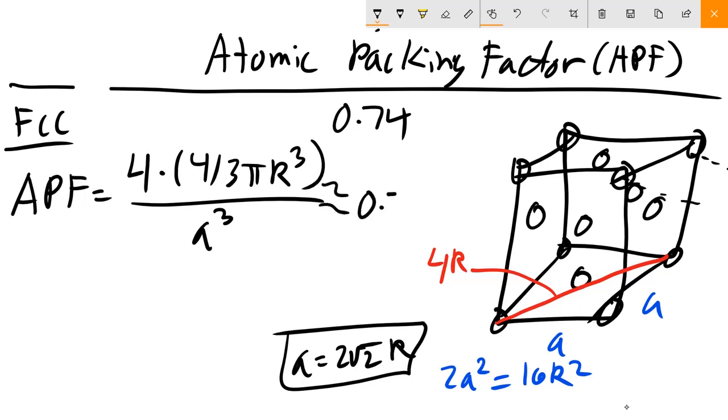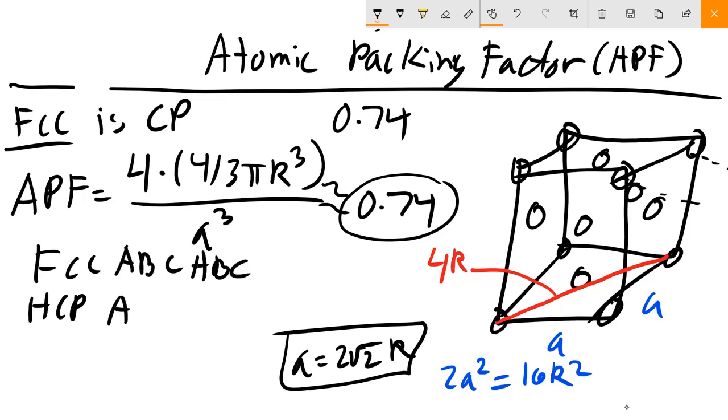With that, plug it in here, and we find that we finally hit our magic number. So FCC is a close-packed structure, as is hexagonal close-packed as well. The difference between FCC and HCP: we can get those structures depending on the packing, ABC ABC versus AB AB, as we discussed in class.